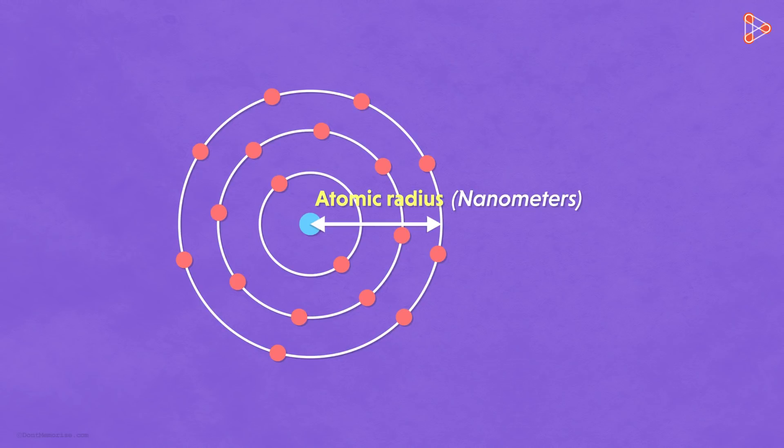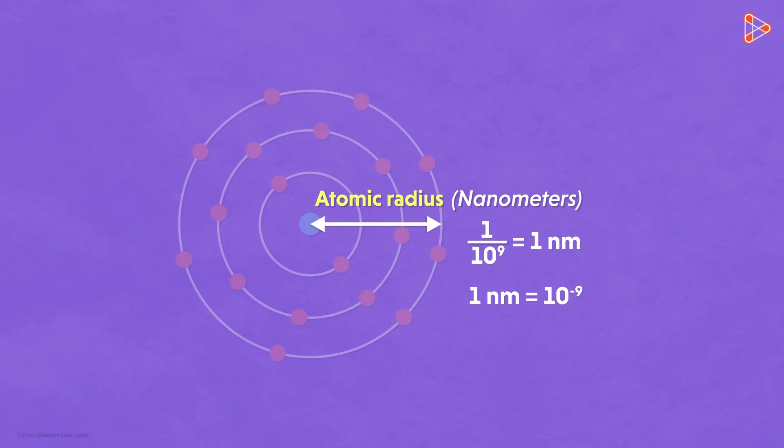Wait a second, do we know what a nanometer is? In simple words, 1 over 10 to the power 9 meters gives us 1 nanometer. So does that mean 1 nanometer is 10 to the power negative 9? Yes, that's how small a nanometer is.